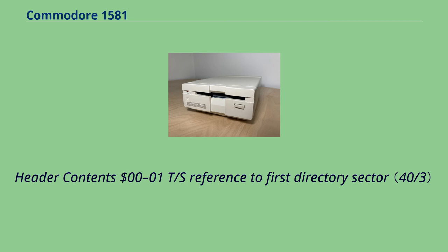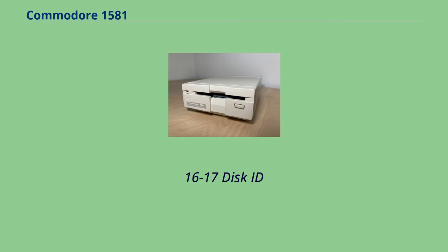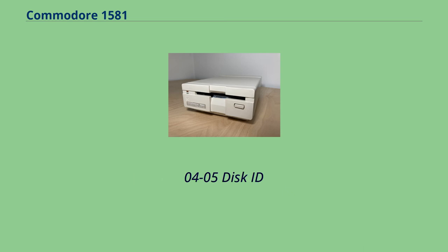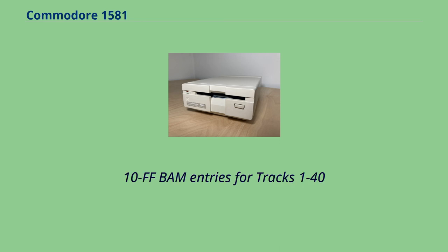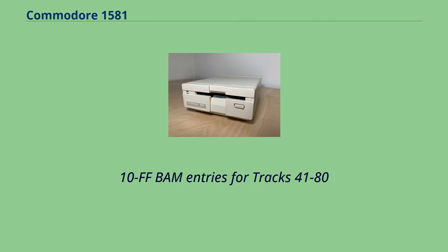Header contents: $00-$01 track/sector reference to first directory sector; $02 DOS version; $04-$13 disk label, zero-padded; $16-$17 disk ID; $19-$1A DOS type. BAM sector at $41: $00-$01 track/sector to next BAM sector; $02 DOS version; $04-$05 disk ID; $06 I/O byte; $07 auto boot flag; $10-$FF BAM entries for tracks 1 to 40. Second BAM sector at $40.5: $02 DOS version; $04-$05 disk ID; $06 I/O byte; $07 auto boot flag; $10-$FF BAM entries for tracks 41 to 80.